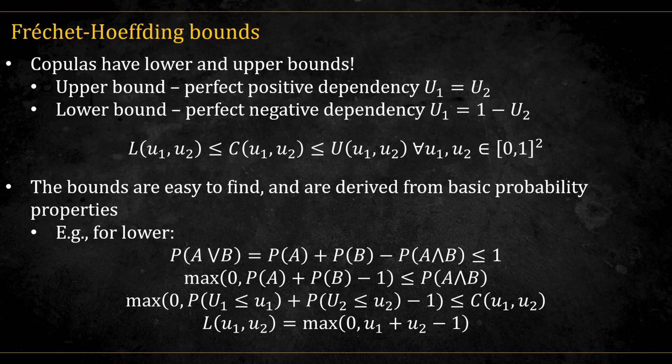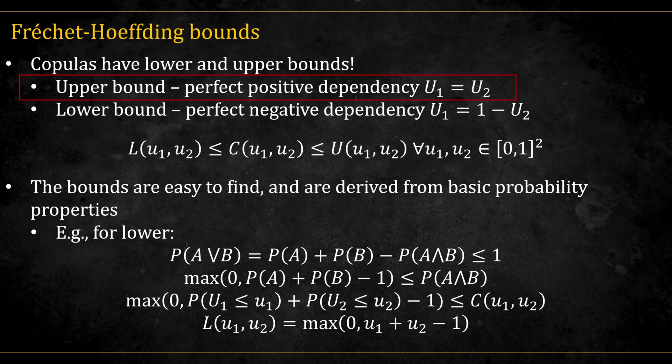Another interesting theoretical result is that copulas have lower and upper bounds. The upper bound corresponds to perfect positive dependence, when both variables move together exactly. In this case, the second variable is simply equal to the first. That is, u2 is equal to u1.